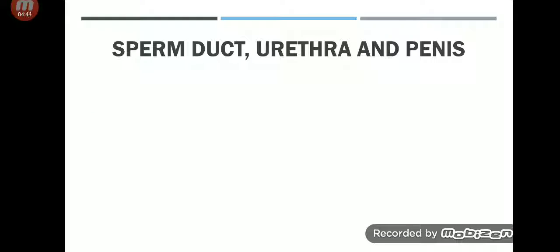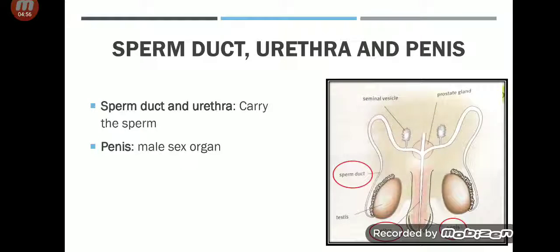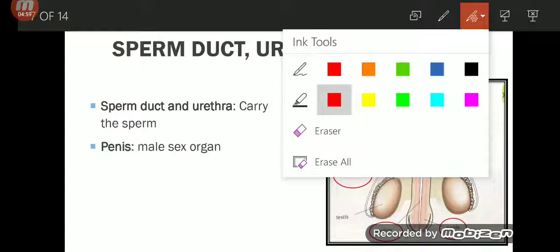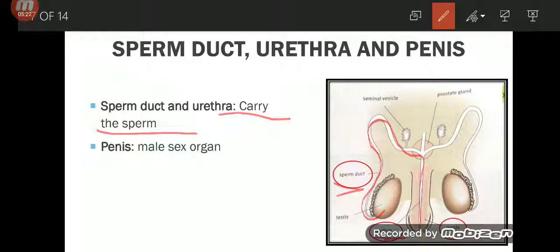Next we have the sperm duct, urethra, and penis. The sperm duct and urethra carry the sperm, and the penis is the male sex organ. In this picture you can see the sperm duct and urethra carrying the sperm. The testis make the sperm, which travels from the sperm duct to the urethra — this is the passage to carry the sperm cell.